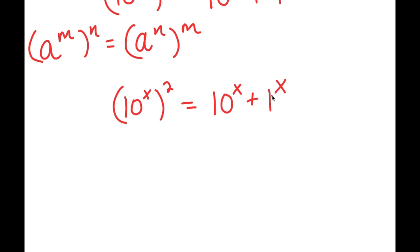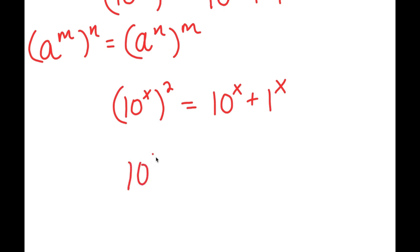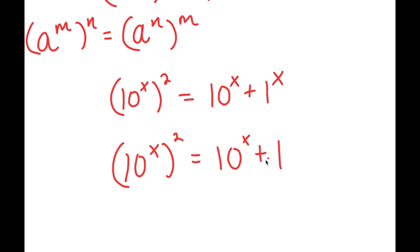1 to the power of any number is just going to be 1, so we can just get rid of this x as an exponent because it won't really change anything. So now I have 10 to the power of x squared is equal to 10 to the power of x plus 1.